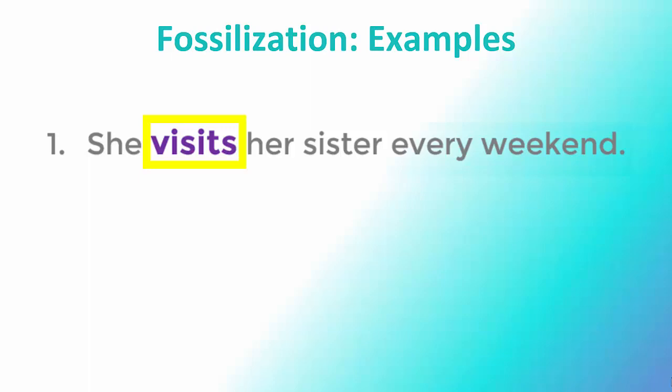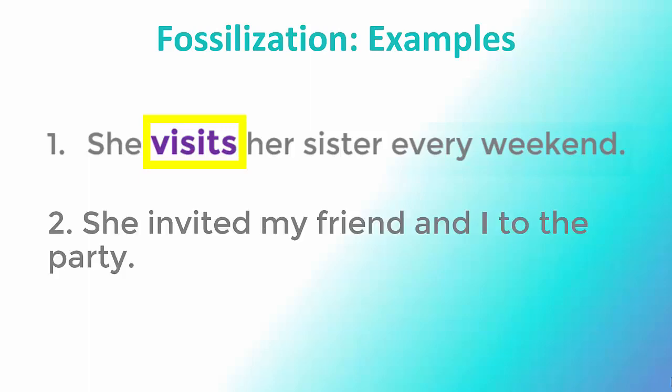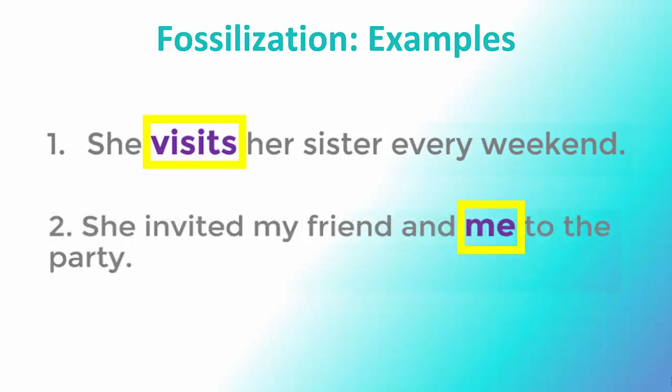Take a moment — maybe pause the video — to consider other examples of fossilized errors that your ELs make. Additionally, native speakers can have speech patterns that are also difficult to get rid of, but are usually different than those of ELs. For example: 'She invited my friend and I to the party.' The correction here is to use 'my friend and me' as the object of the preposition.